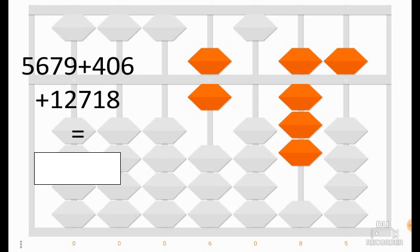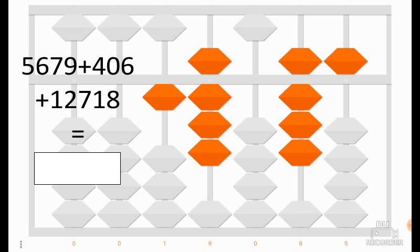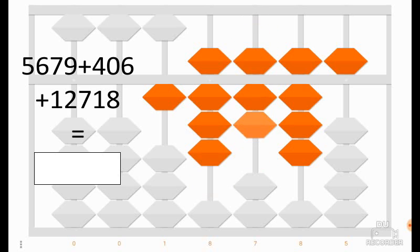To add 12,708, we add 1 coin in the ten-thousands column, 2 coins in the thousands column, 7 coins in the hundreds column, and 1 coin in the tens column. So here we have added 12,710.